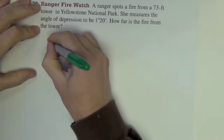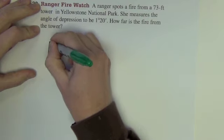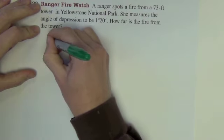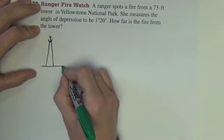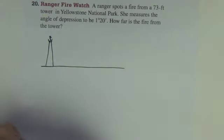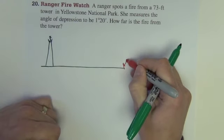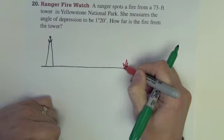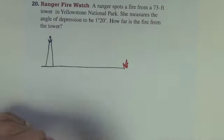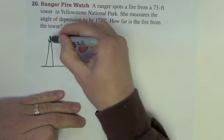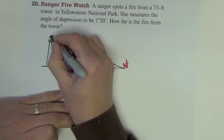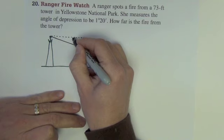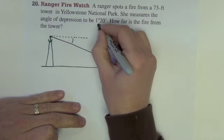So let's try and draw this. We've got a ranger tower. There's our ranger sitting in our tower. And out here, we've got our fire out here. She measures the angle of depression to that tower, or from the tower to the fire. So this angle of depression right inside of here, this is not drawn to scale. This angle of depression is 1 degree 20 minutes.